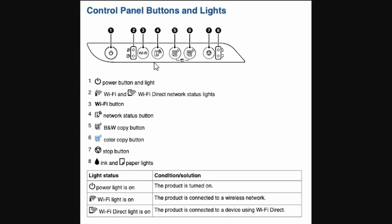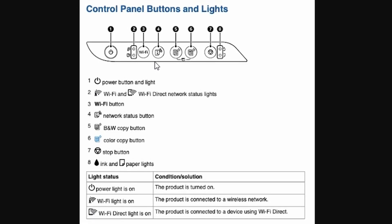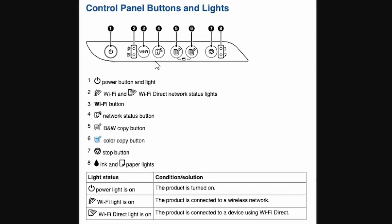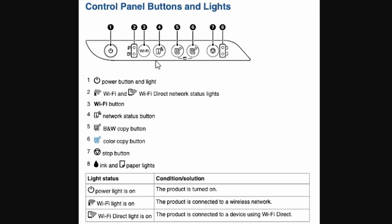You'll see the Wi-Fi light and the Wi-Fi direct light flashing alternately. This is a sign that the reset process is starting. Once the lights are flashing, release both buttons.